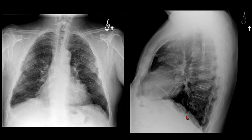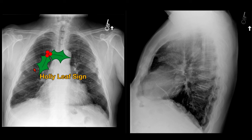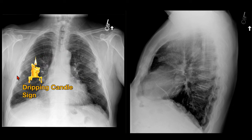On chest x-rays, these plaques will have this angulated, sort of scalloped appearance. And because of that, this has been described as the holly leaf sign. Also, some people have described the plaques you see in tangent as a dripping candle appearance.